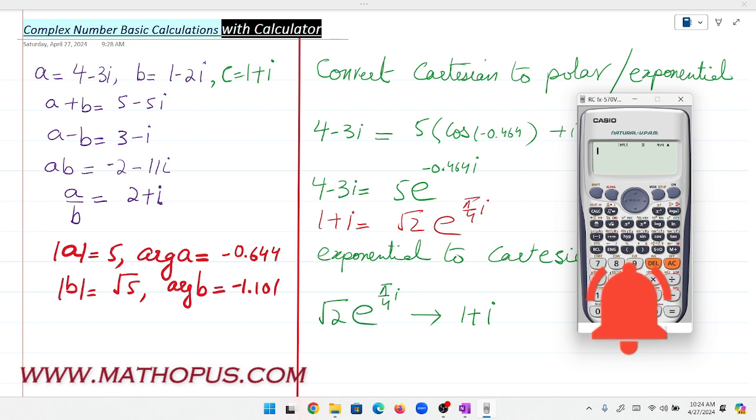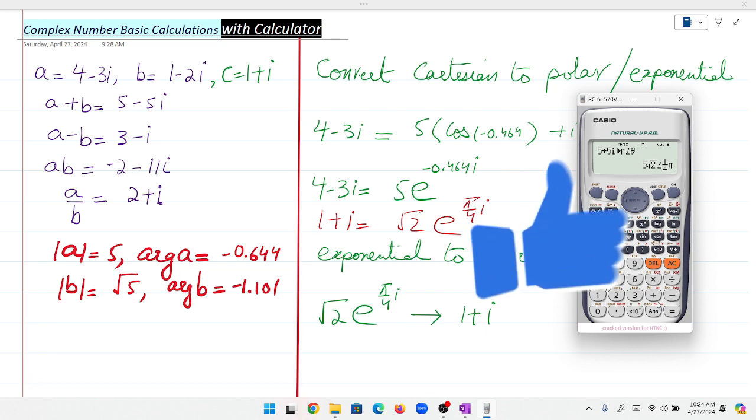You can also type in any complex number directly without storing it in memory. For example, 5+5i. To convert, press Shift, 2, then option 3. The result: 5√2 is the length and π/4 is the argument.